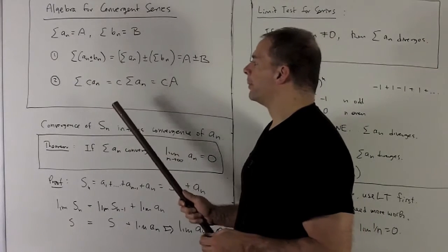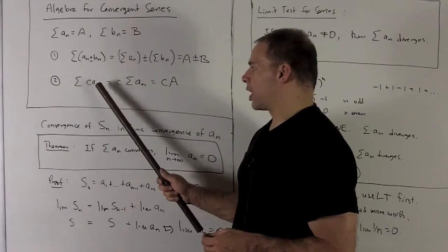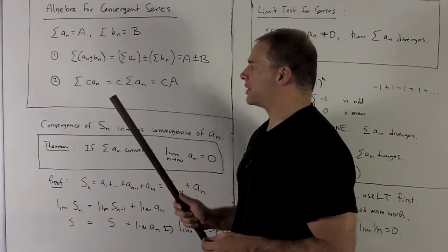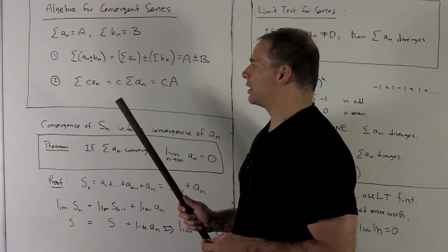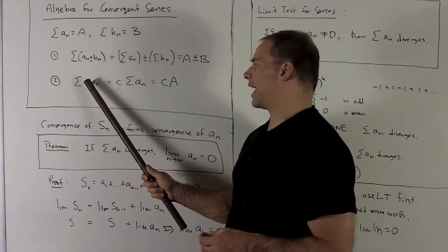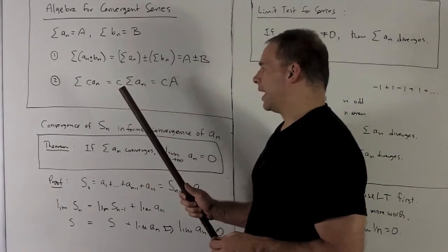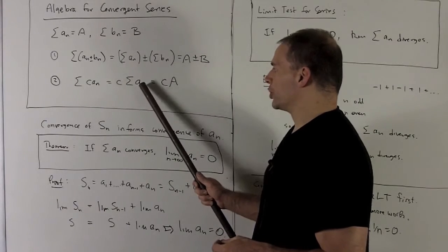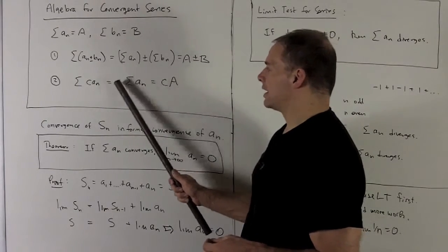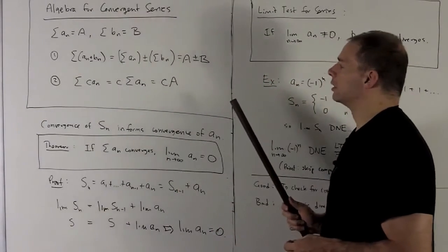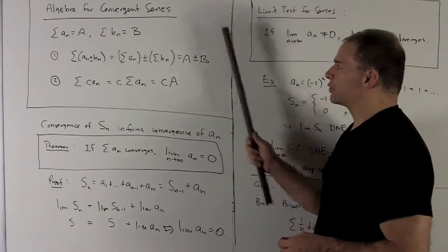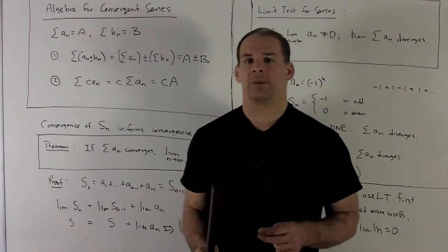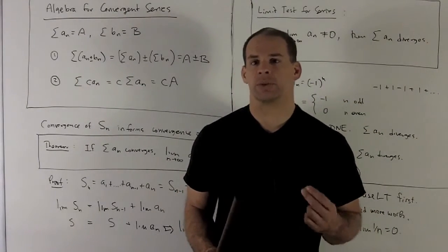Our second result: if I take sequence a sub n, multiply the sequence by a constant, and take the associated series, then its sum is just going to be given by the original sum times that constant. These results are pretty much what you would expect if you were working with sequences.